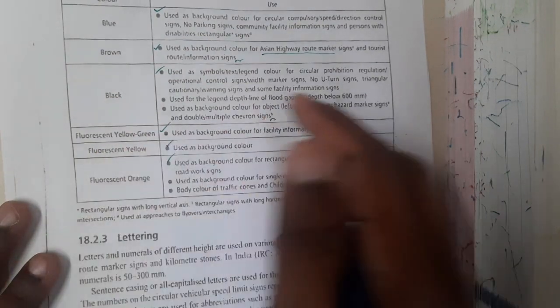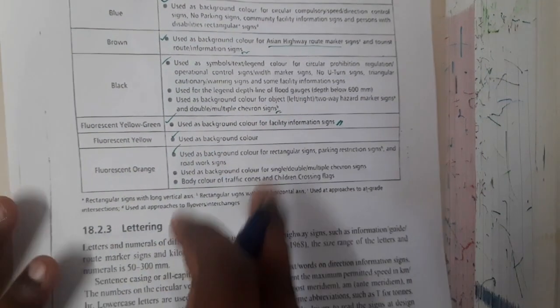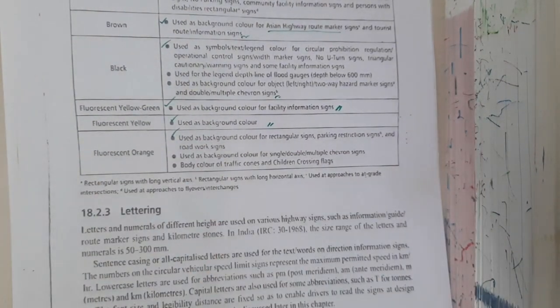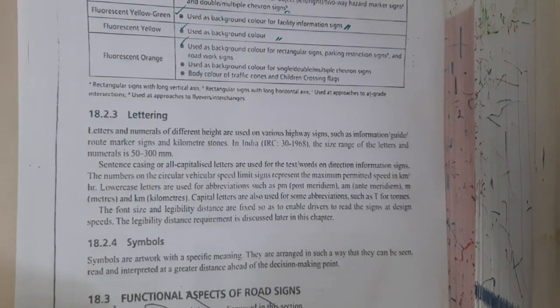Fluorescent yellow green - these are used for information signs. If you recall, you can remember them. Similarly, fluorescent oil, these all are used.